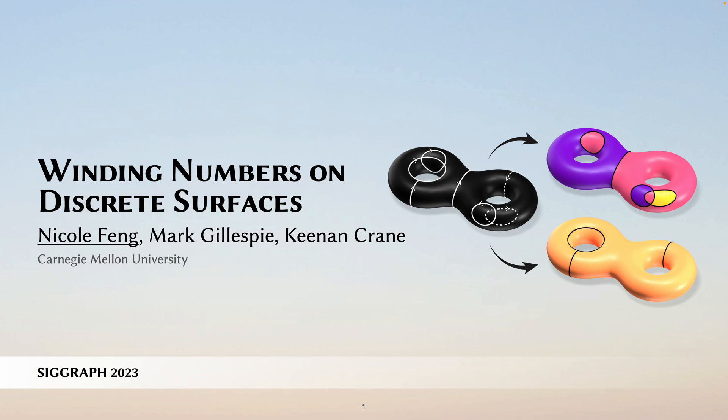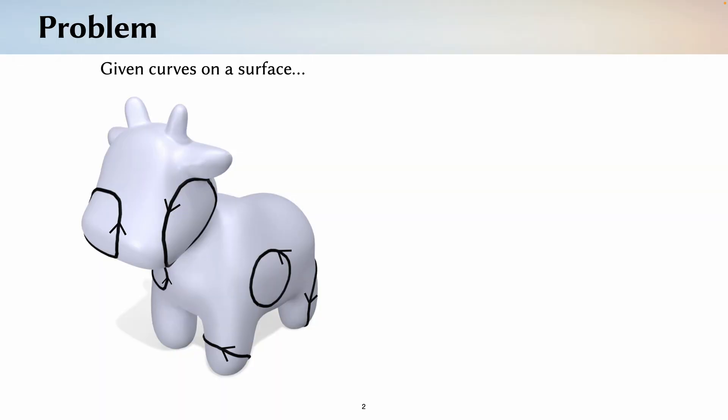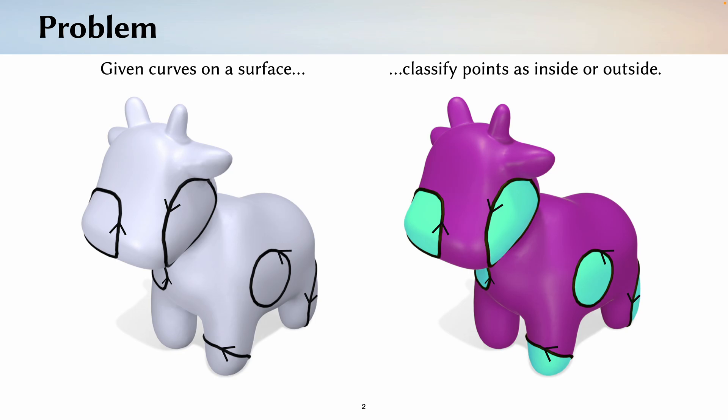Welcome to a discussion of winding numbers on discrete surfaces. Our starting point is the following problem. Given some curves on a surface, we would like to classify each point on the surface as being inside or outside the curve.